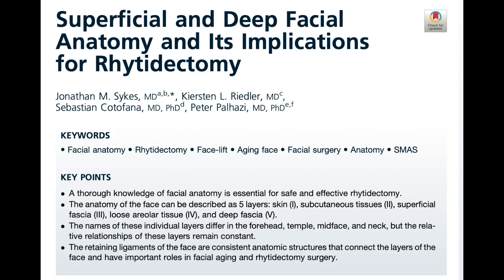A little bonus content. There's a paper by Dr. Jonathan Sykes from about two or three years ago in one of the facial plastics journals. It does a really good job — it's actually entitled 'Superficial and Deep Facial Anatomy and Its Implications for Rhytidectomy.' I would recommend anyone who's interested to check that out. It breaks down the layers of the entire face into five layers: the skin, the subcutaneous superficial areolar tissue, the superficial fascia, the loose areolar tissue, and the deep fascia.